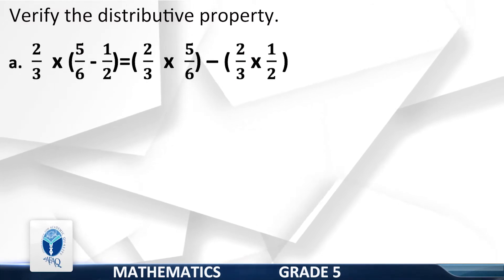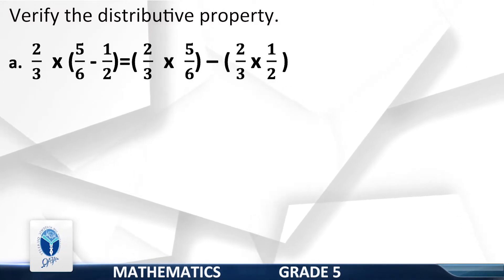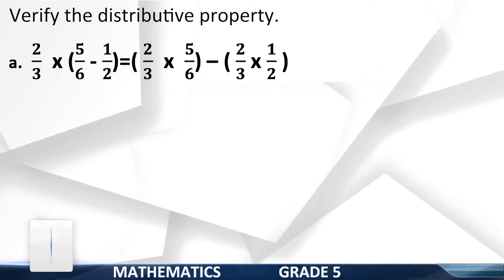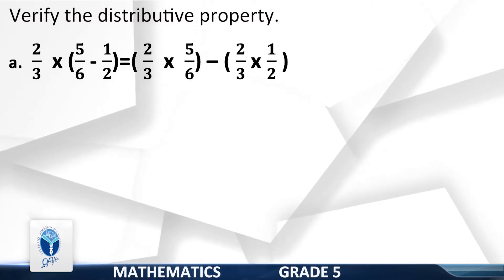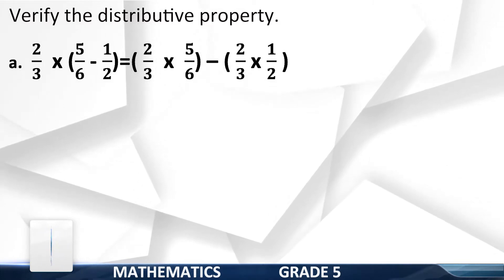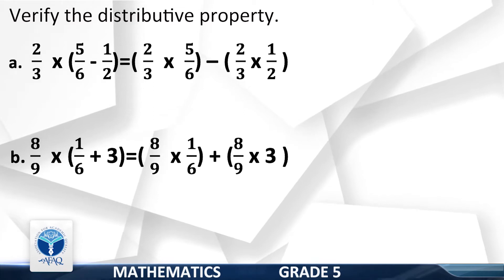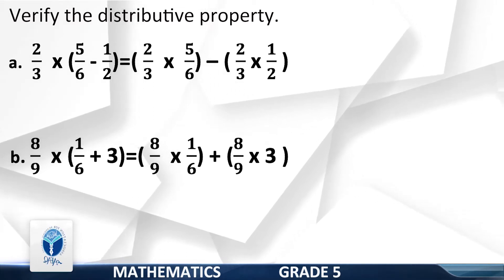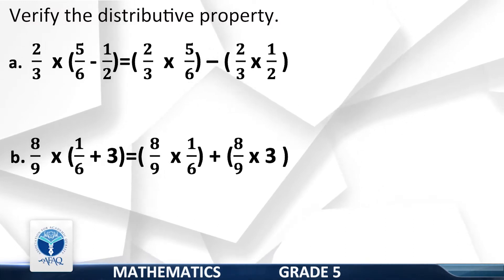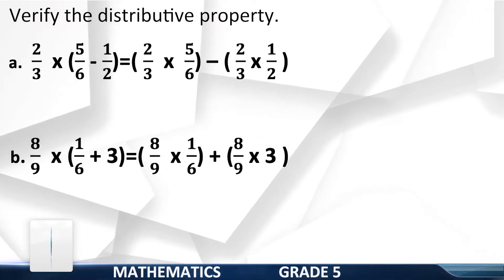A: 2/3 into (5/6 minus 1/2) equals (2/3 multiplied by 5/6) minus (2/3 multiplied by 1/2). B: 8/9 multiplied by (1/6 plus 3) equals (8/9 multiplied by 1/6) plus (8/9 multiplied by 3).